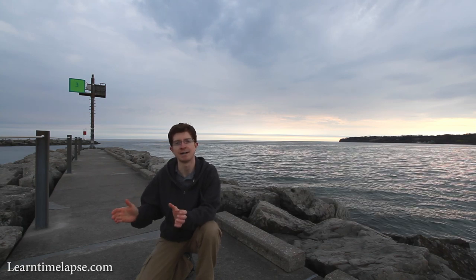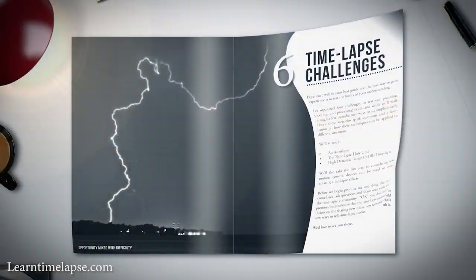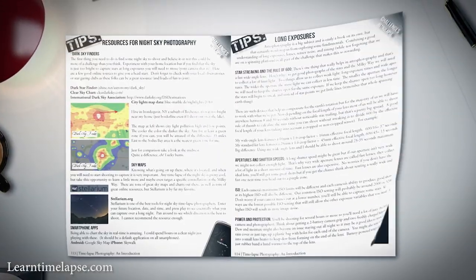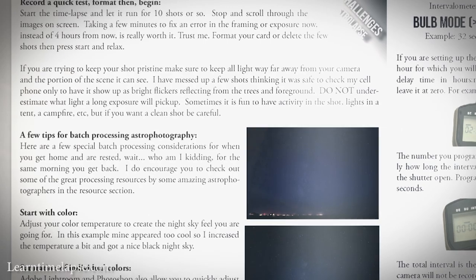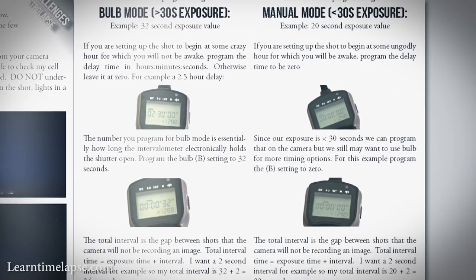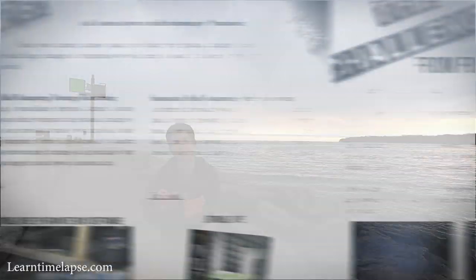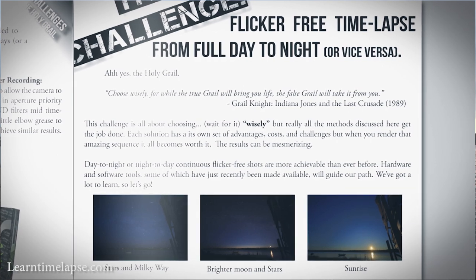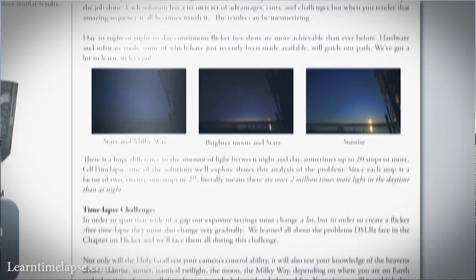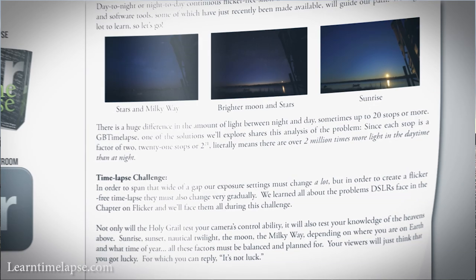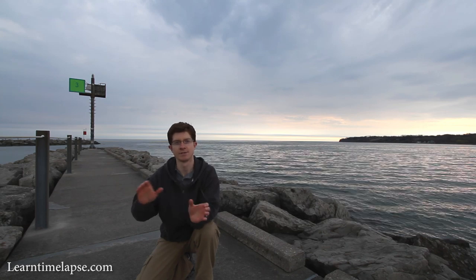We'll shoot a timelapse of the night sky and create an astrolapse, covering low-light shooting and the rule of 600 to prevent stars from streaking, plus rendering tips to reduce noise. Then we'll talk about the timelapse holy grail — shooting from full day to full night or full night to full day — covering a couple of different approaches including tethered shooting, GB Timelapse, advanced intervalometers, and an LR Timelapse solution.